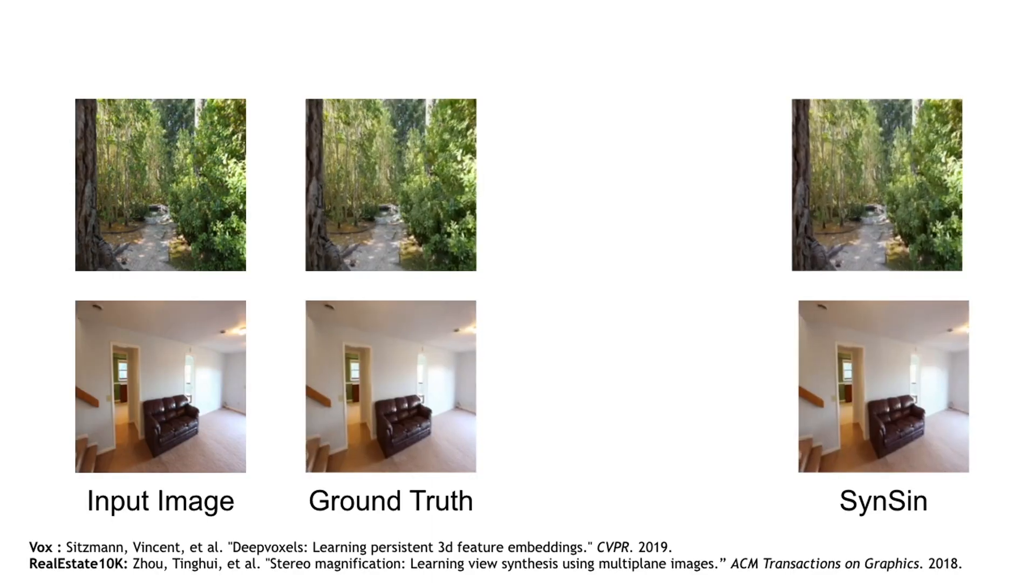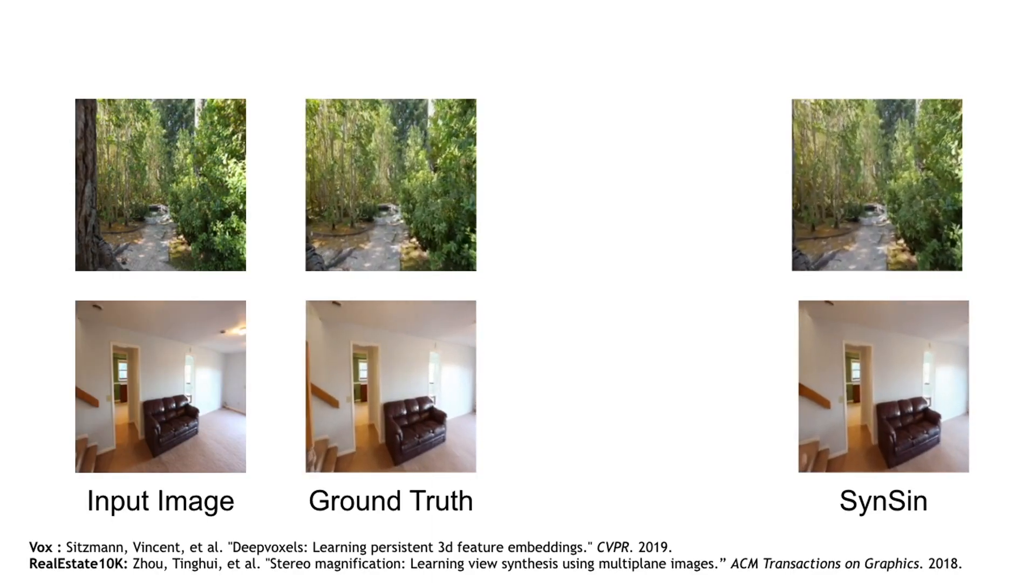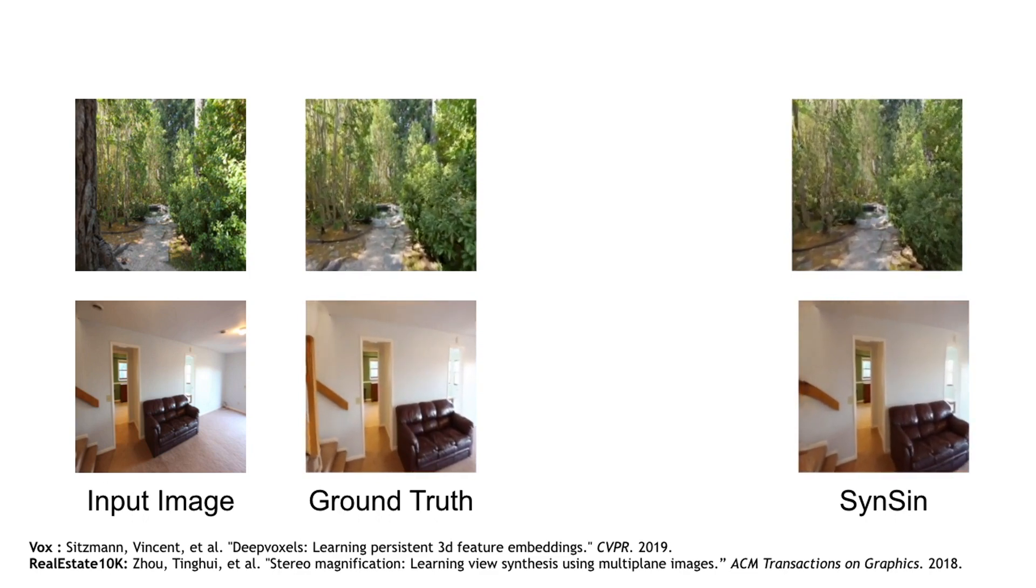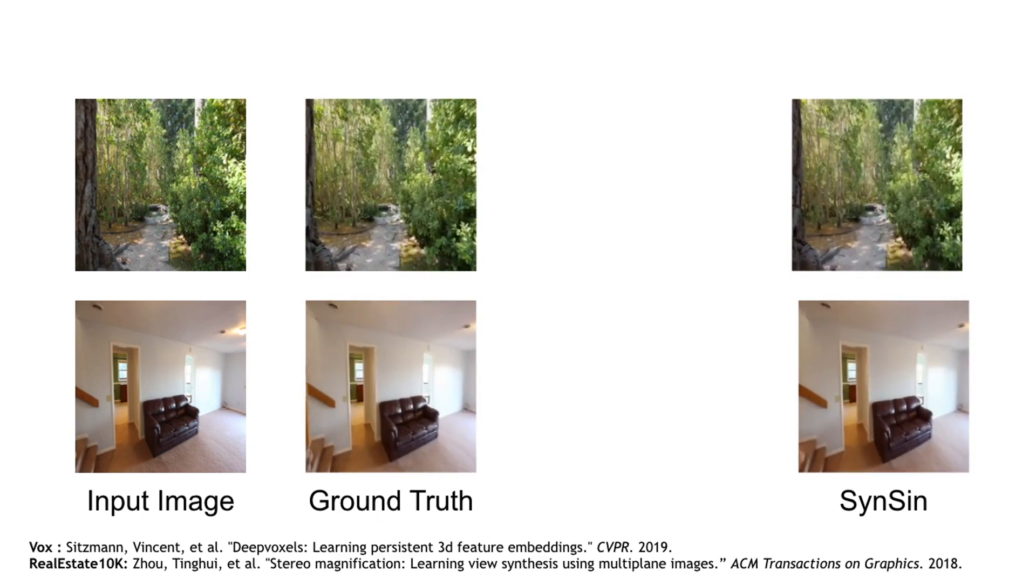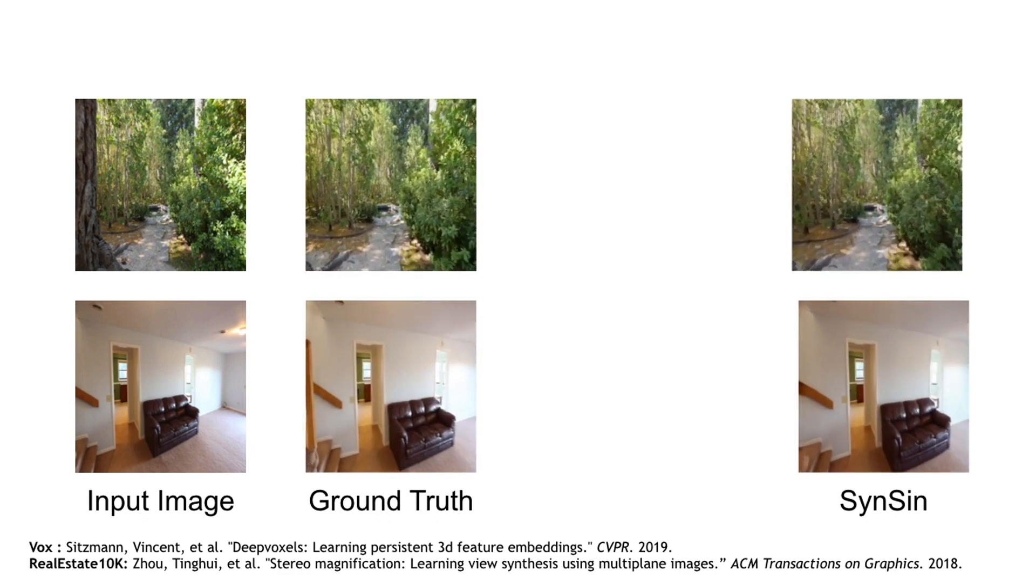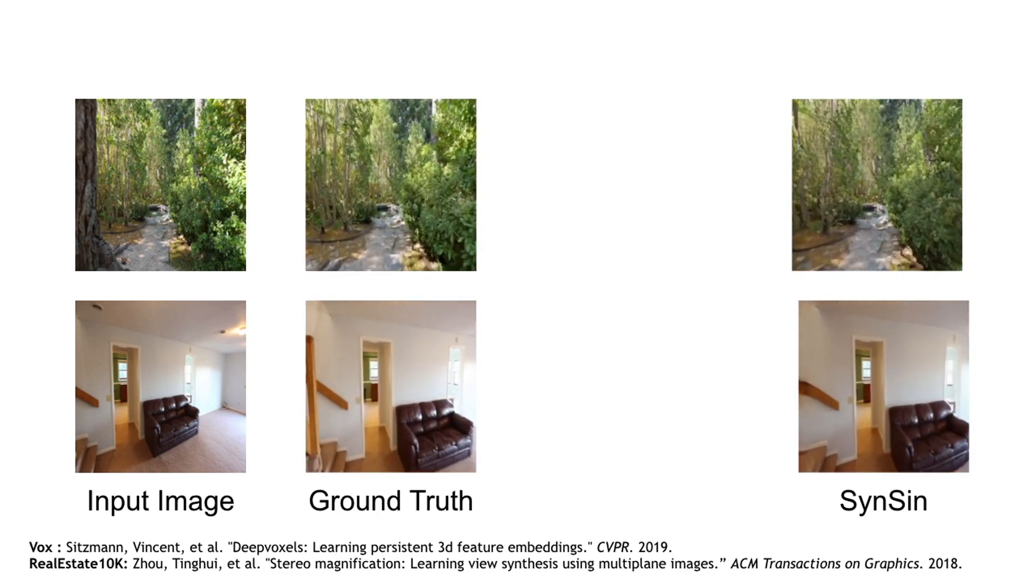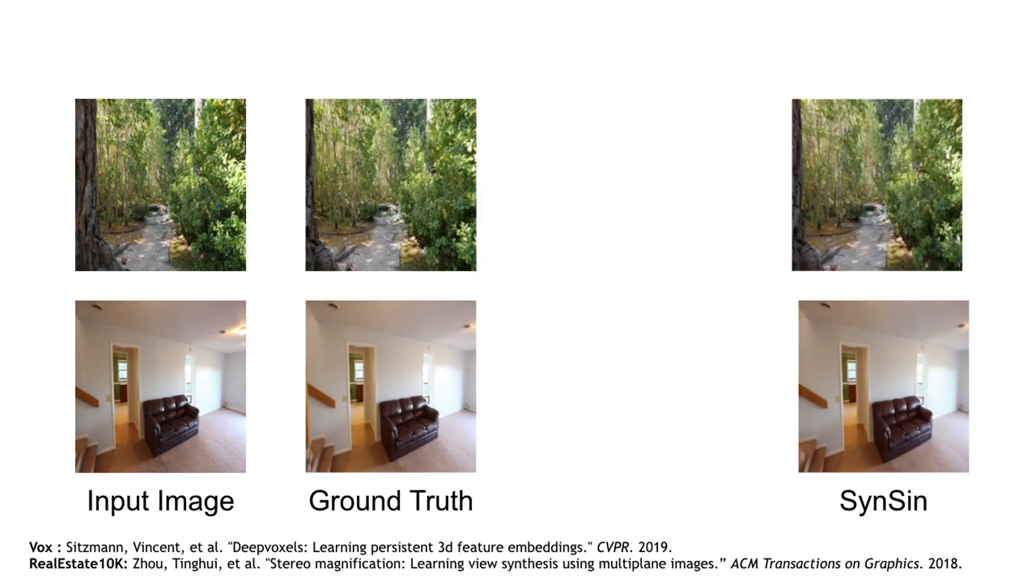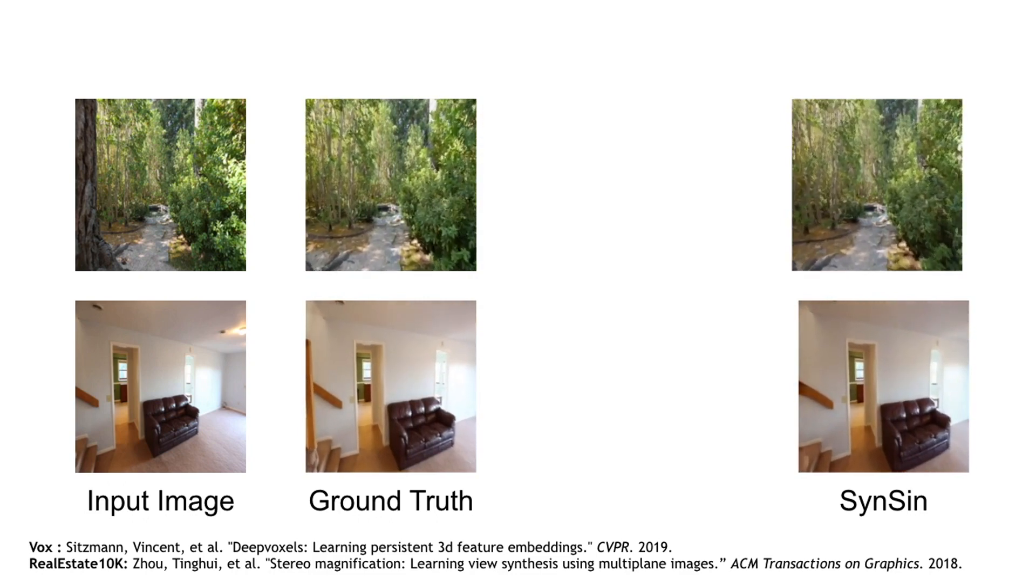We test our model and compare it to the baselines on real scenes. Given the input image, the task is to generate images corresponding to the viewpoints of the ground truth video. Our model is able to generate new viewpoints for outdoor scenes. It also manages to outpaint the banister in the living room scene.